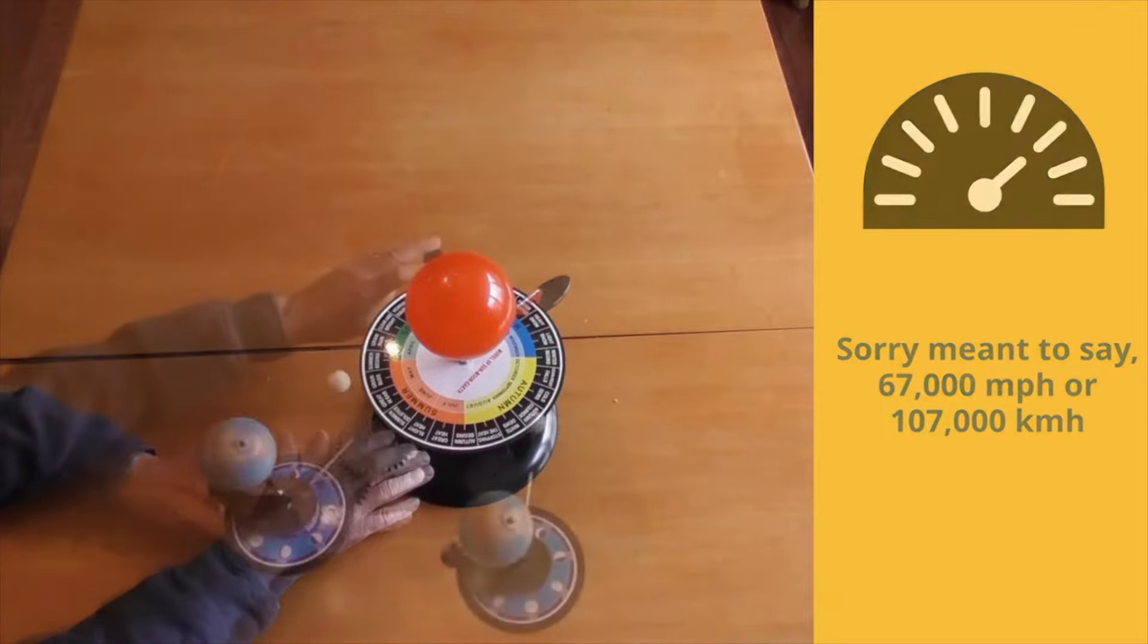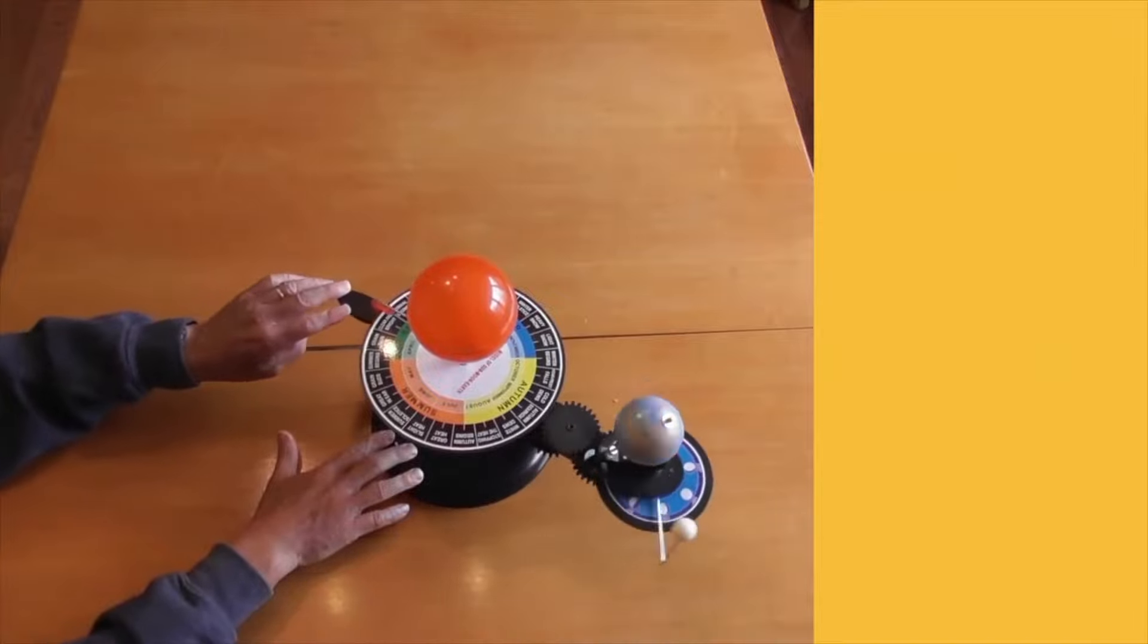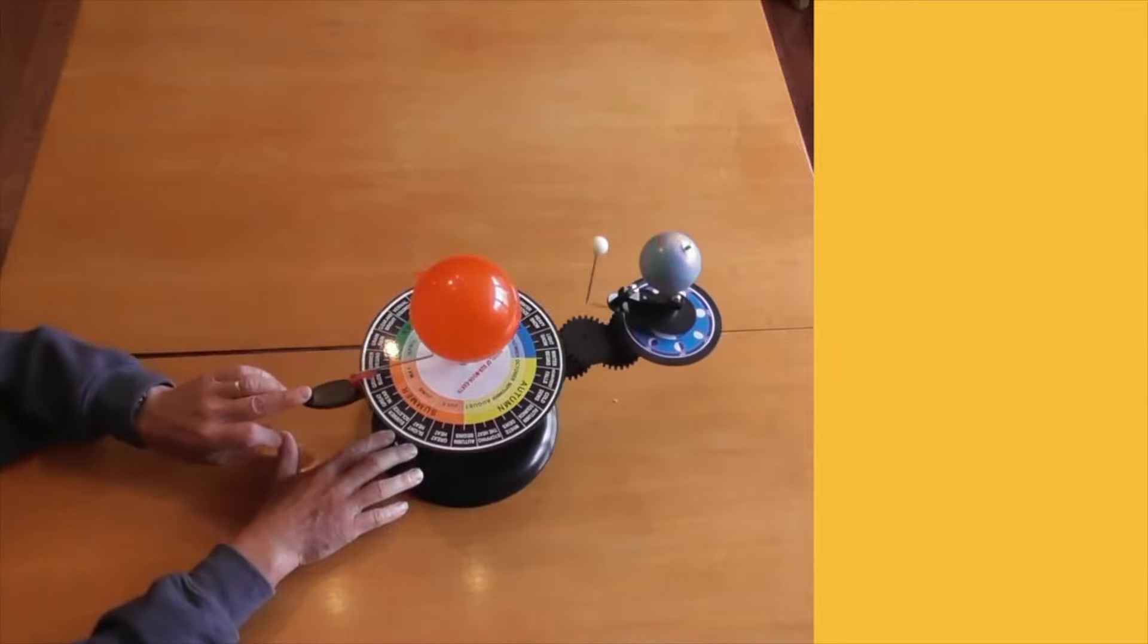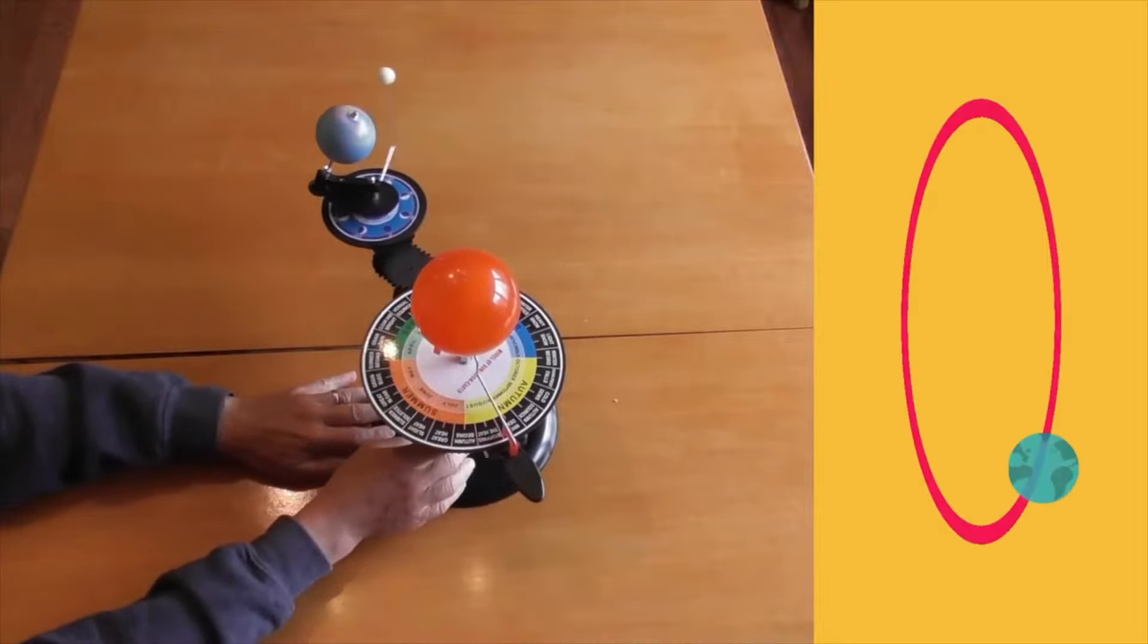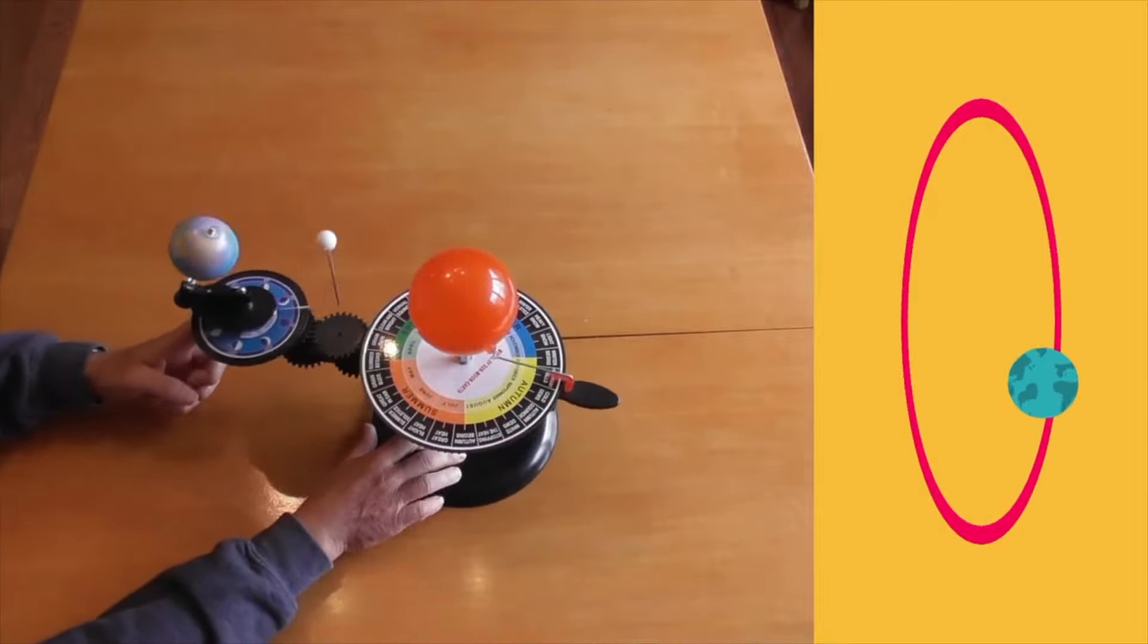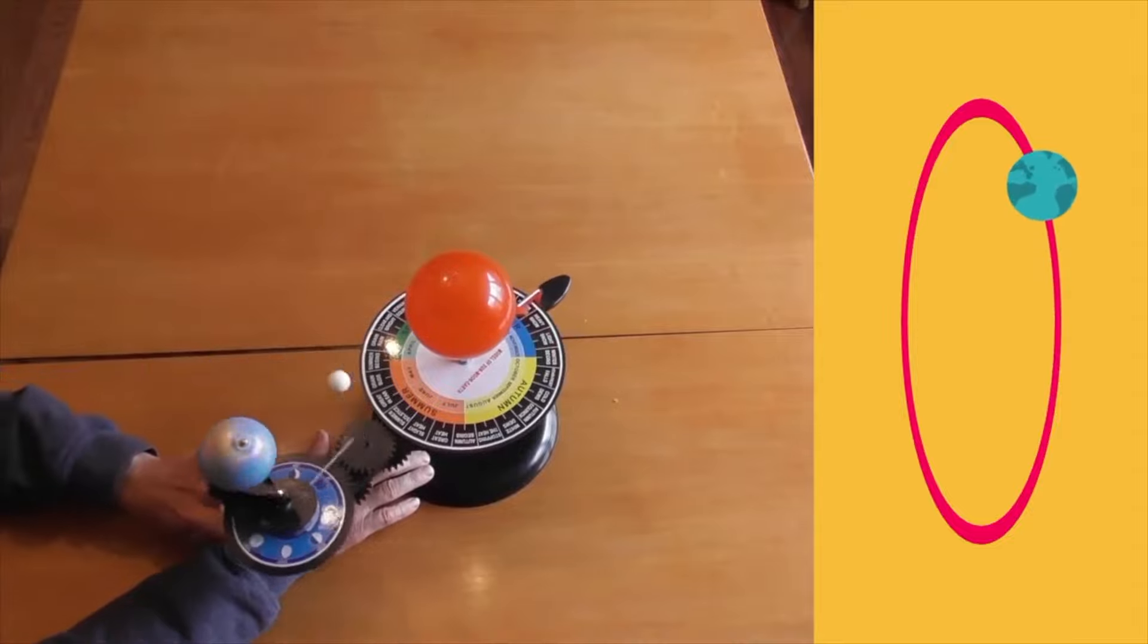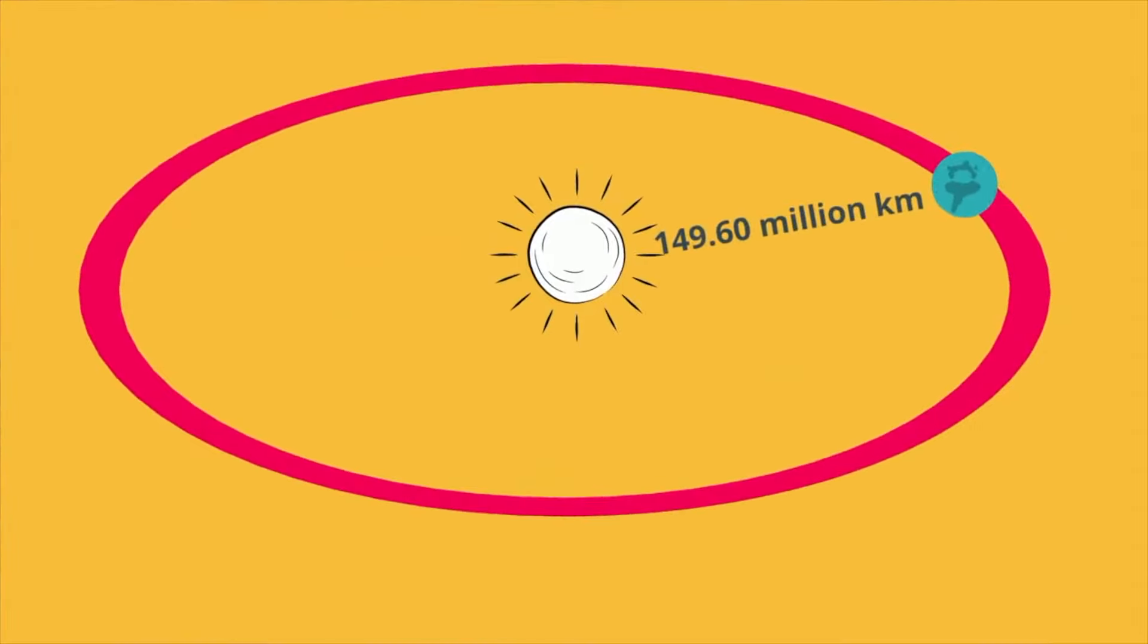Now, if you look at this orrery, there is one slight problem. As the Earth is traveling around, it is in a circle. However, the Earth's orbit is an ellipse, and the Earth has an average distance from the Sun of 149.60 million kilometers, or roughly 93 million miles from the Sun.